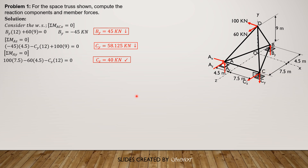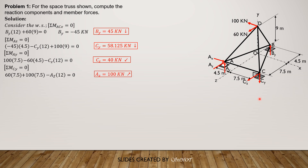We can also sum up moment about CY equals 0 to solve for AZ, or equivalently sum up forces along Z. By the right-hand thumb rule, AZ is negative: negative AZ times 12, then positive 60 times 7.5, then plus 100 times 7.5, minus AZ times 12, equals 0. Solving, since the result is positive, our assumed direction for AZ is correct.